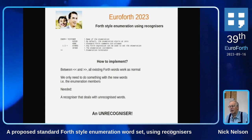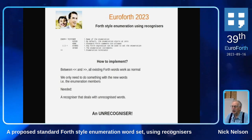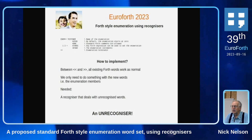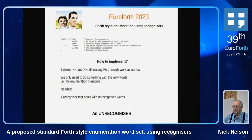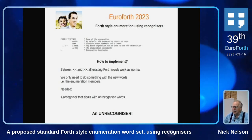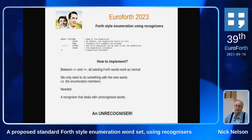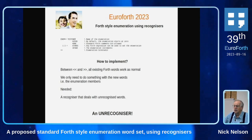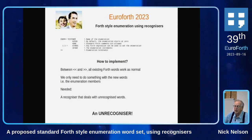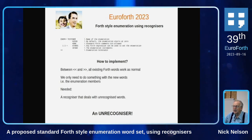So I thought about how to implement this in the simplest possible way. We note that between the bits that enclose the enumeration, all existing Forth words work exactly as normal. All we have to do is deal with words which do not already exist — that is, the enumeration members. And so I had the idea that we really need a recognizer that deals with unrecognized words: an unrecognizer.